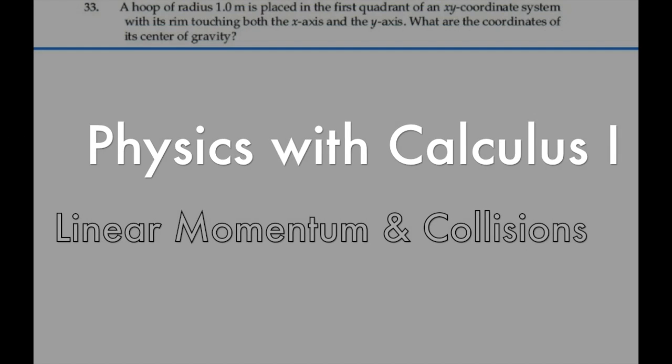Here's problem 933. A hoop of radius 1 meter is placed in the first quadrant of an x-y coordinate system with its rim touching both the x-axis and the y-axis. What are the coordinates of its center of gravity?